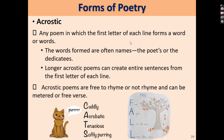Often we form names in acrostic. The longer acrostic poems can create entire sentences from the first letter of each line. Take note that acrostic poems are free to rhyme or not rhyme, and can be metered or free verse. For example, for the word 'cats': cuddly, acrobatic, tenacious, softly purring.